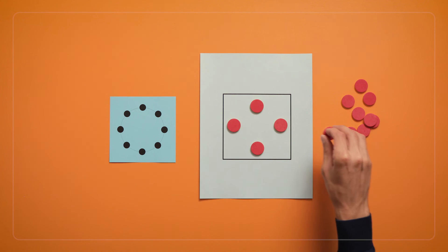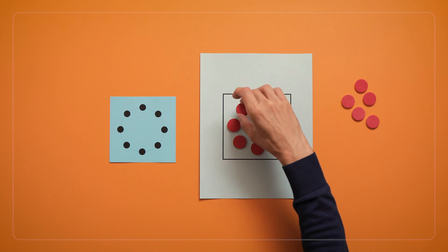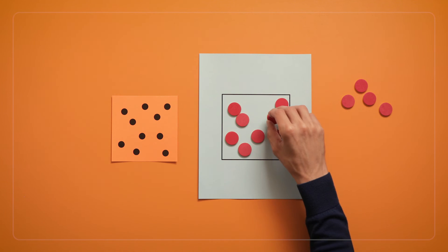As kids get more and more practice with this game, you can start using harder dot configurations, like these circle or scatter cards.